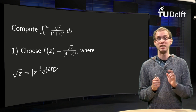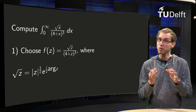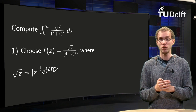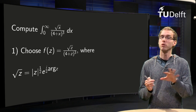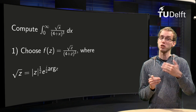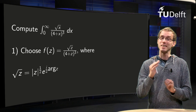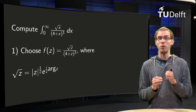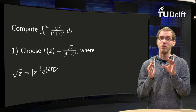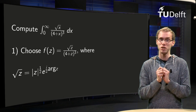We see the first complication: a square root of z, so we have to be careful and will need to choose a branch cut. We will do that when we choose the contour. For now we know that √z equals √|z| times e^(i · ½ · arg(z)), where the argument of z still has to be specified.